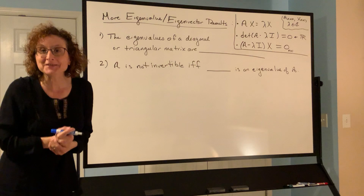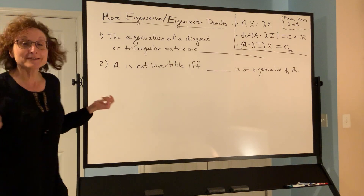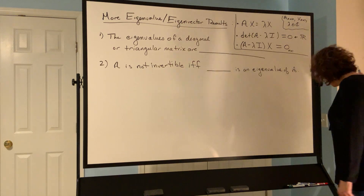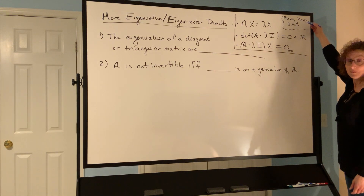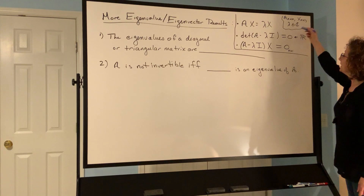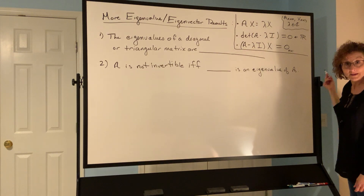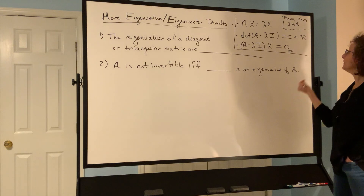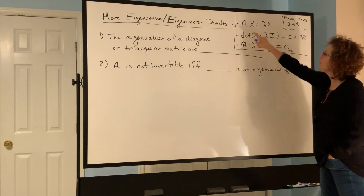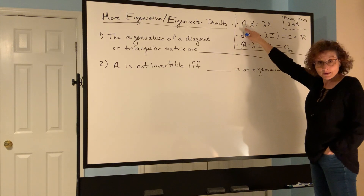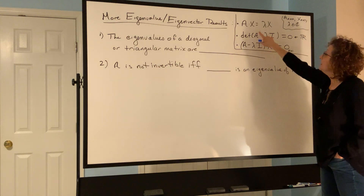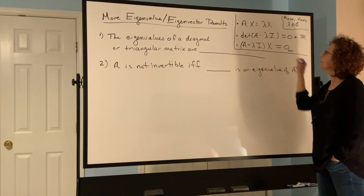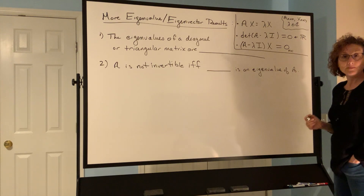More eigenvalue and eigenvector results. So here's just a reminder: we have an n by n matrix A, an n by 1 column vector of unknowns x, and we have lambda, a scalar, which can be a complex number or a real number. What is the definition of an eigenvalue-eigenvector pair for a matrix A that is n by n square? It is a scalar and a vector that satisfies the equation Ax equals lambda x.